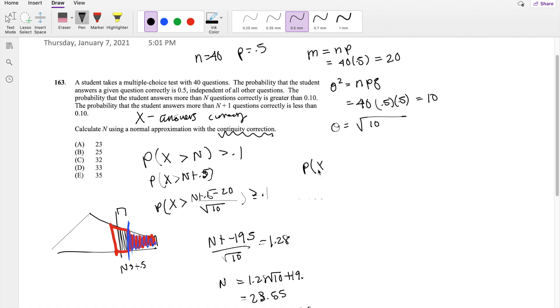So the probability that x is greater than 23, is that greater than 0.1? So if we normalize it, it will be probability that z is greater than 23 minus 20 divided by square root of 10. So the probability that z is greater than 0.94, is that greater than 0.1? So z is greater than 0.94, it's like here, it's greater than 0.1.